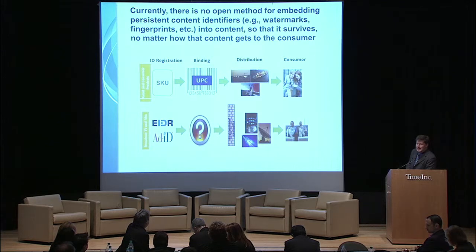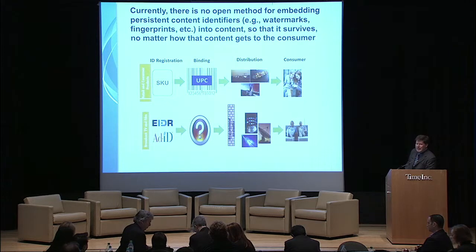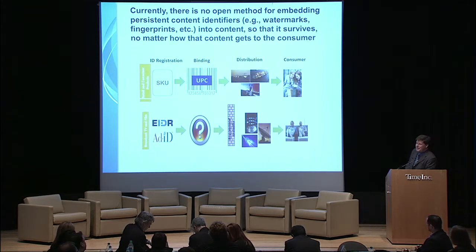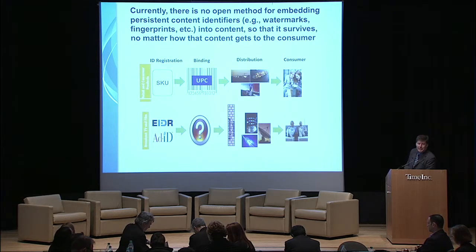For identifying the content, we're making great strides between Ad-ID for advertising content and EIDR for program content. So we're partway there — good news, give ourselves a checkmark in that area. However, how do we bind that in with the content? We don't really have a way of doing that. What that results in is a brick wall so that when we get down to distribution to consumers, we don't have an unequivocal way of saying this content was consumed at this time via this distribution mechanism by this consumer. We don't have that because we're not able to bind these IDs into the content.